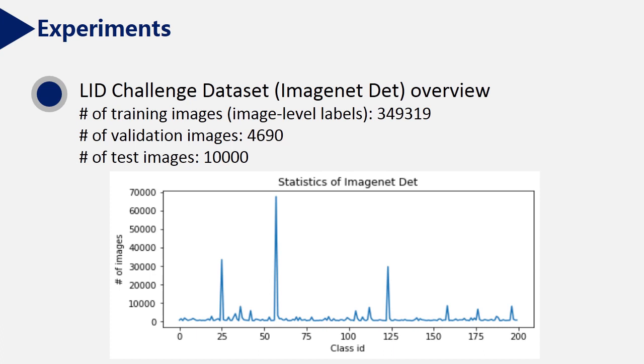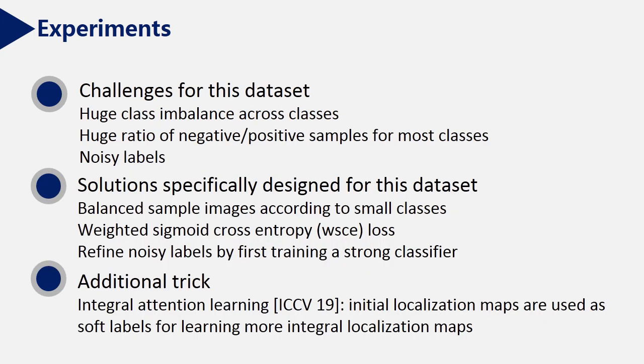Finally, let's move on to experiments. This plot shows the statistics of this dataset. As you can see, there exists huge class imbalance. After looking deep in the dataset, we found three challenges. The first one is a huge class imbalance across classes. The second one is a huge ratio of negative over positive samples for most classes. The last one is noisy labels.